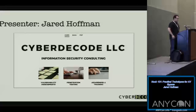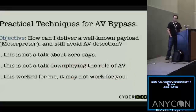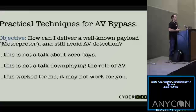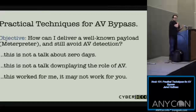So what's the talk about today? The objective is: how could I deliver a well-known payload? Today's payload is Meterpreter — the reverse HTTPS Meterpreter — something that's well-known to a lot of AV vendors out there, and still have it bypass their detection techniques. I'm not talking about some new leak technique, zero day, no ROP chain here.